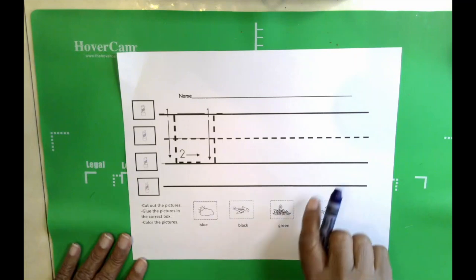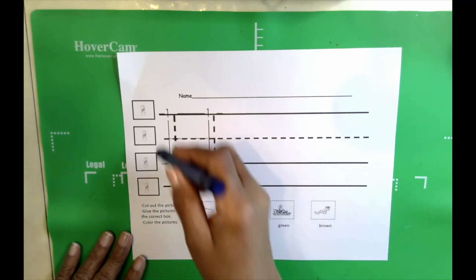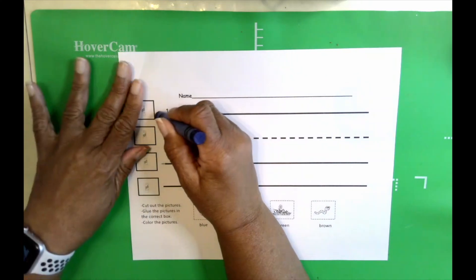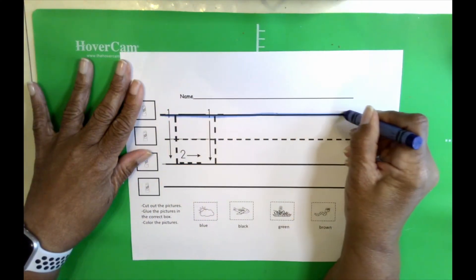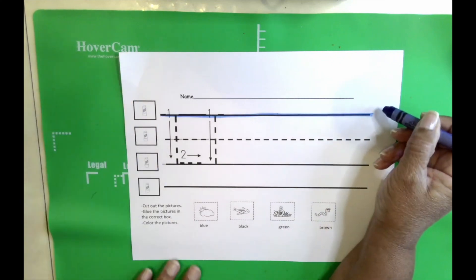We have our blue crayon and we're going to color the first line blue. When you think of the sky, you think of blue.